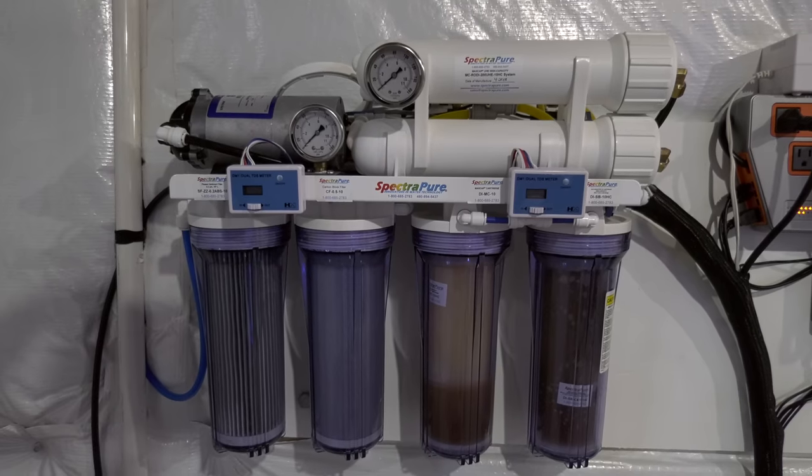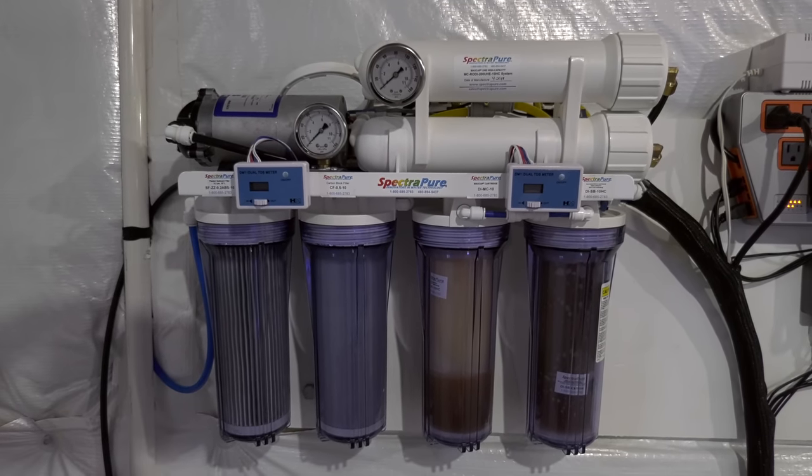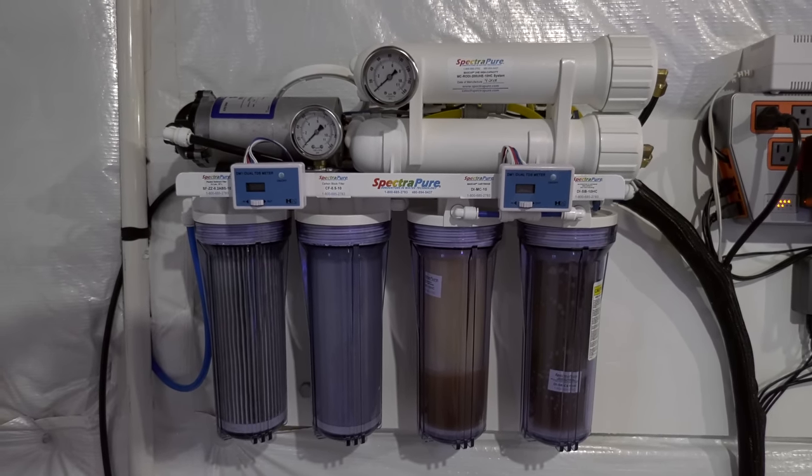With any system that I'm automating, whether it be a display tank, a quarantine system, or a mixing station like this one, I'm always looking for redundancy. I want to give myself some backup in case something goes wrong. And with this system, while the RODI unit turns itself on and off based on water levels, I added a layer of backup with the Neptune Systems Apex just in case something goes wrong.